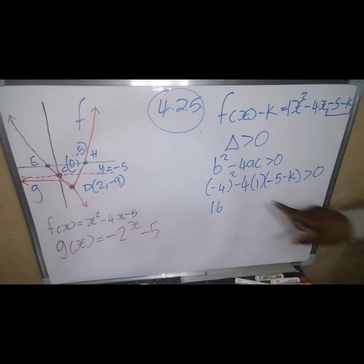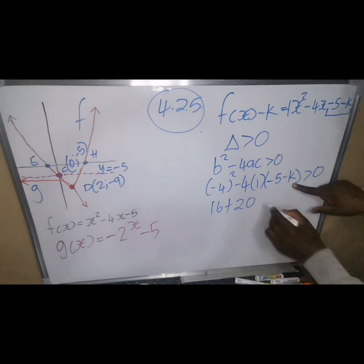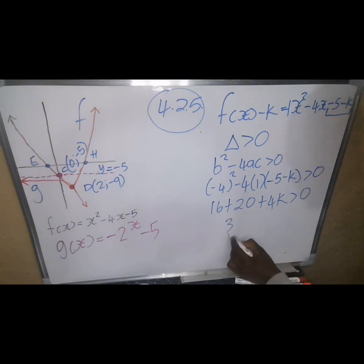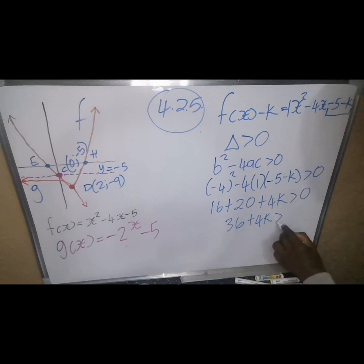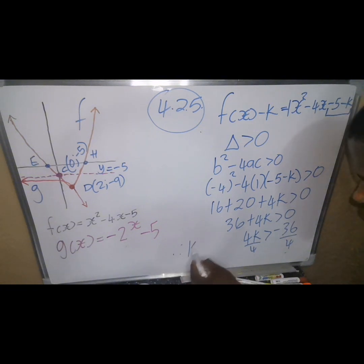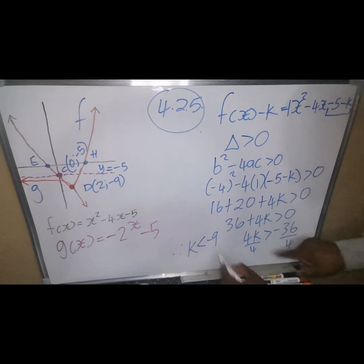Solving: 4k < −36. Dividing both sides by 4 and flipping the inequality: k < −9. Therefore k must be smaller than negative 9 for f(x) − k to always be positive.